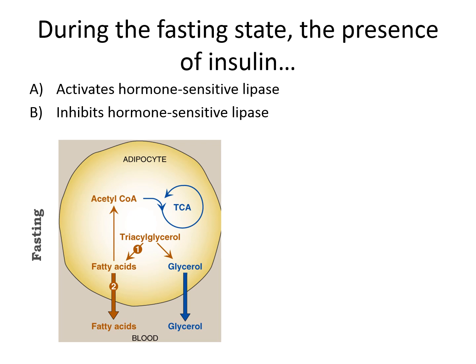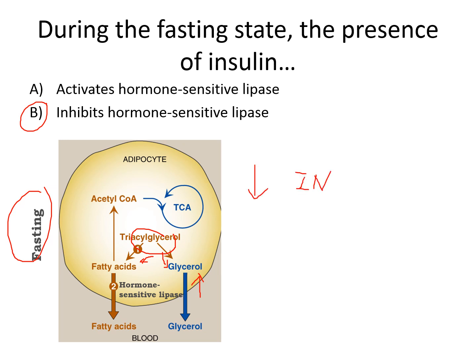Insulin inhibits hormone-sensitive lipase. During the fasting state, you get increased activity of hormone-sensitive lipase, breaking down triacylglycerol into its respective building blocks. This happens during the fasting state when you have a very low insulin level. A low insulin level corresponds to an increased activity of hormone-sensitive lipase; in other words, insulin actually inhibits the activity of hormone-sensitive lipase.